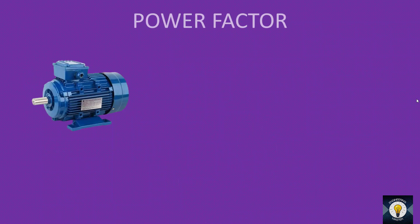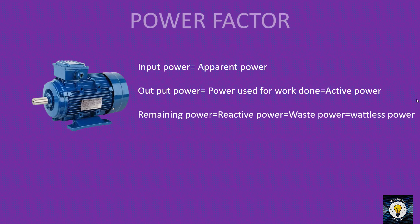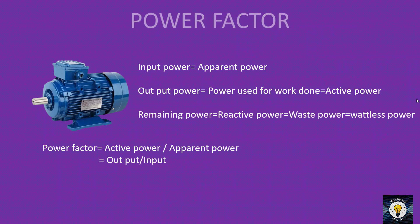Let's consider a motor. The input power of a motor is called apparent power. The output power — the power which is used to do usable work — is called active power. All the input power will not be converted into output; there will be some waste power or wattless power, which is called reactive power. This power is used for the creation of a magnetic field and other purposes in inductive loads.